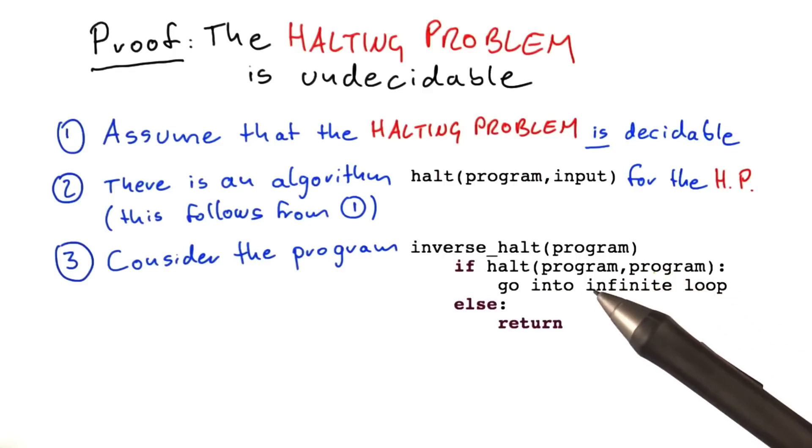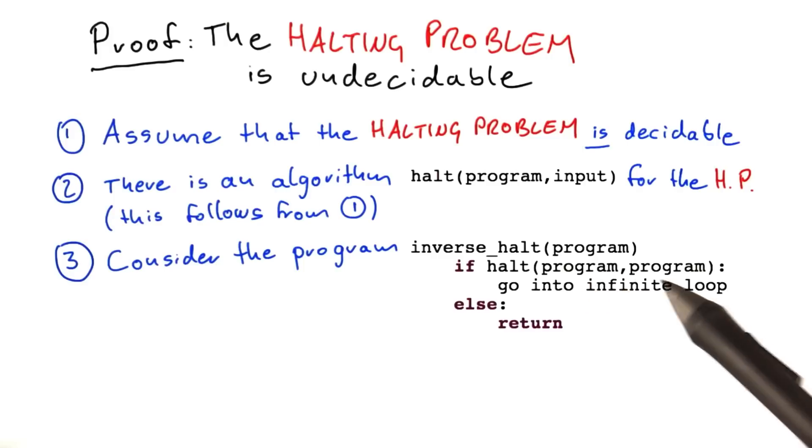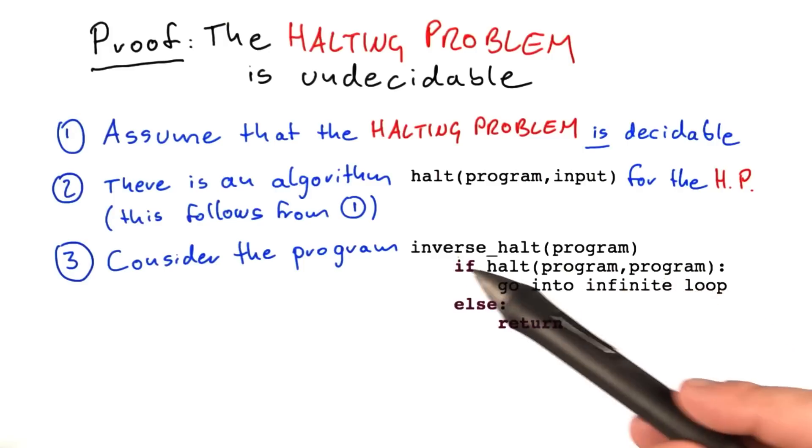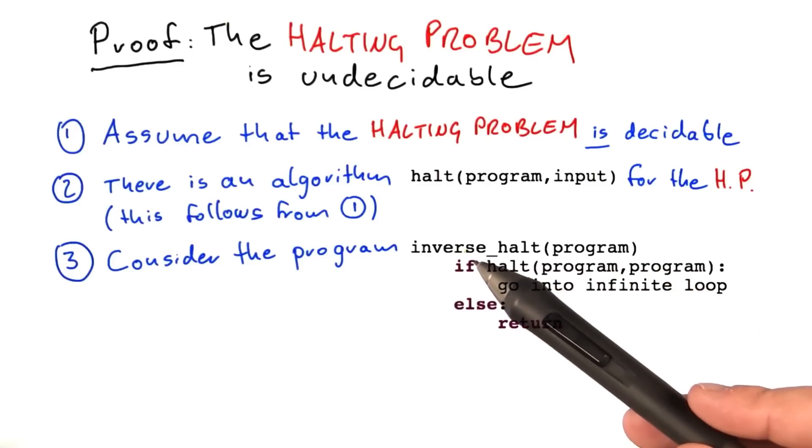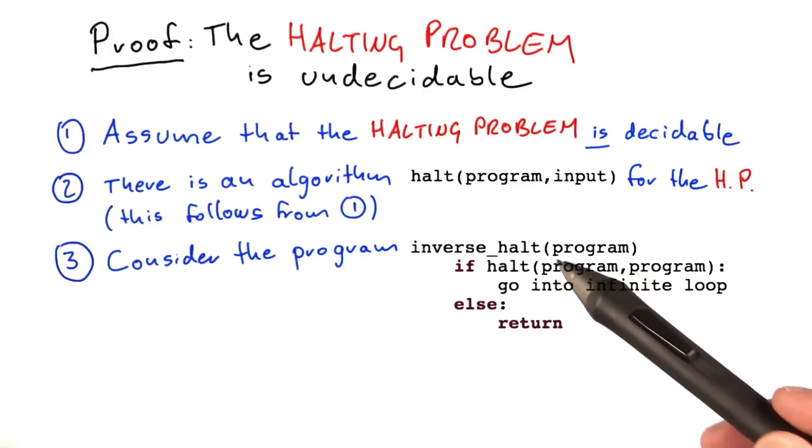And the way this then reacts is the following. If halt says the program, when it's fed its own code, will stop, then inverse-halt, that's why I call it inverse-halt, will go into an infinite loop. So if program stops on being fed itself, then inverse-halt of that program will not stop. It will not halt.